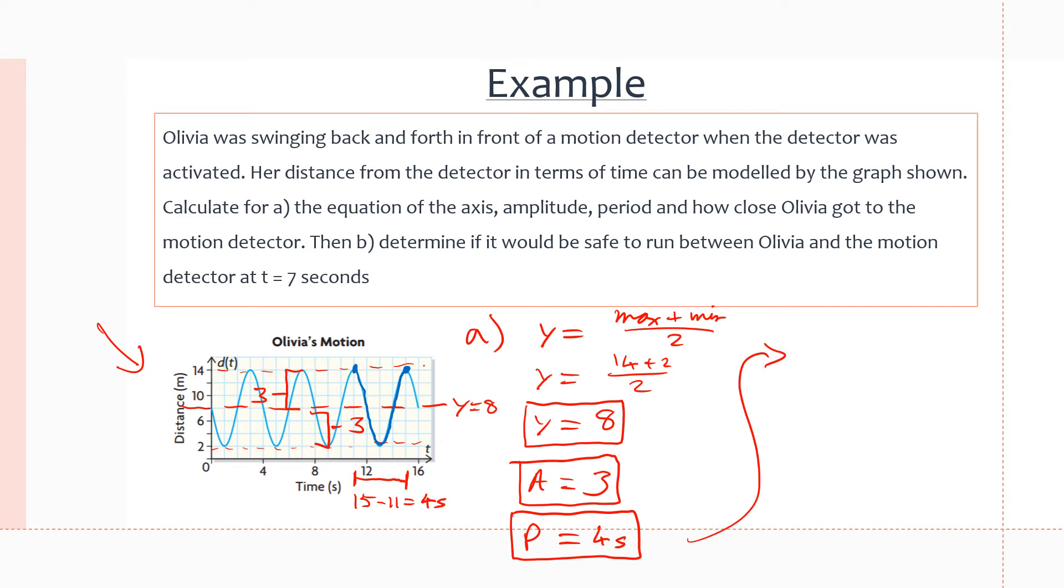Lastly, we want to find how close Olivia got to the motion detector, which will be our minimum value, which equals 2, because this is the point in the graph that is closest to the x-axis, which is where the motion detector is. Therefore, Olivia gets to 2 meters away from the motion detector.